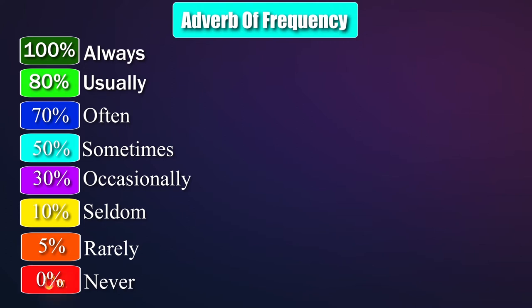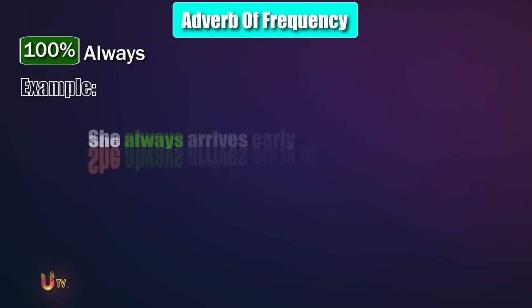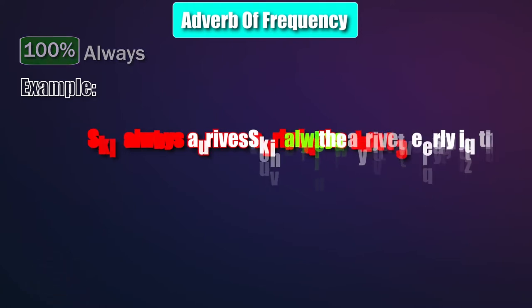Now we are going to make some sentences using adverbs of frequency to understand how often an action happens. For example: she always arrives early in the class. Just keep in mind that when you use 'always' it shows the highest percentage, which means the action happens all the time. She always arrives early in the class, which means she has never been late.